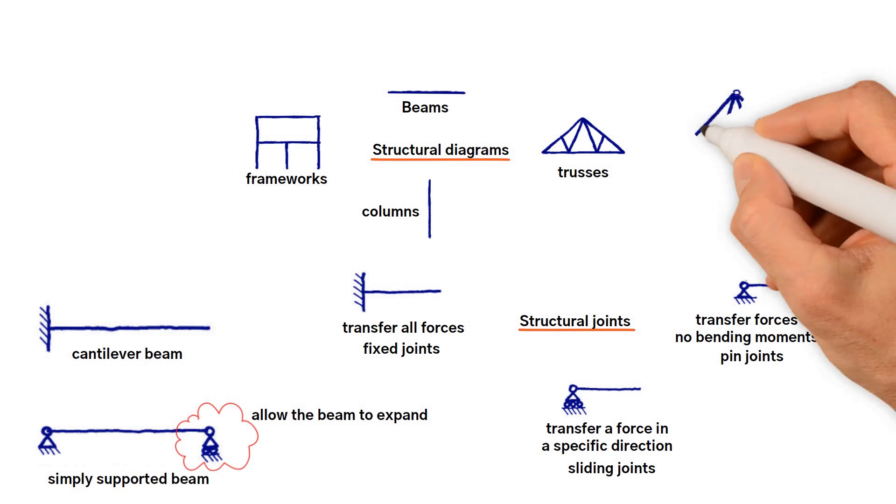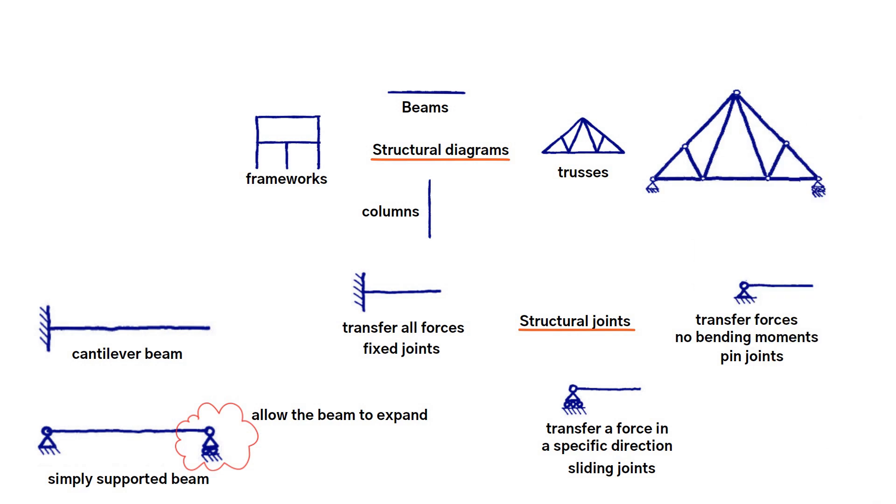As a general rule, triangulated structures like trusses are normally assumed to have members pin jointed together, a pin jointed truss.